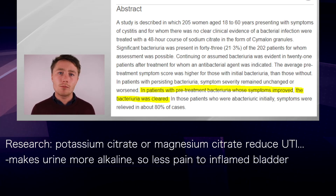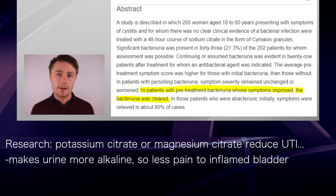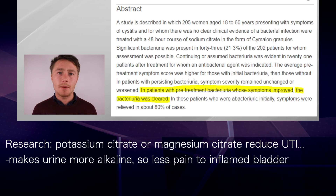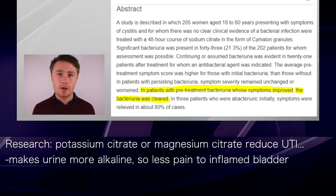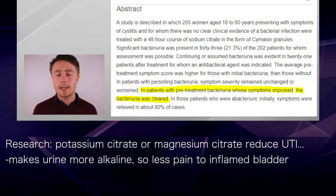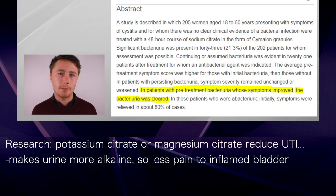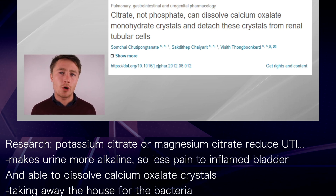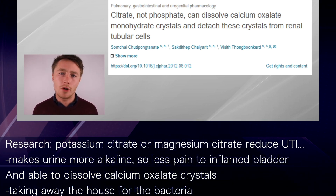Now, interestingly, there is some research to show that urinary alkalisers such as potassium citrate or magnesium citrate can be very effective in reducing the symptoms of urinary tract infections. It alkalizes the urine and because the urine is more alkaline, it's going to cause less pain to an inflamed bladder, and it is able to actually dissolve calcium oxalate crystals, taking away the house for the bacteria.